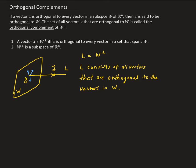For example, if we take Z, and any component of Z — any multiple of Z — if we dot that with something in W, it's going to be zero. This is the idea of orthogonal complements.